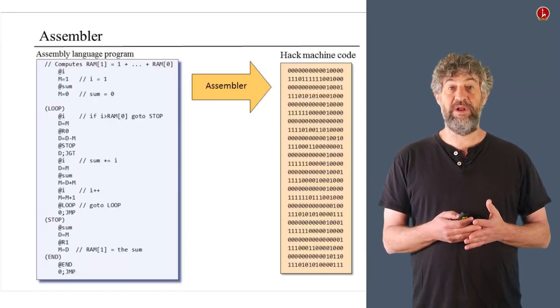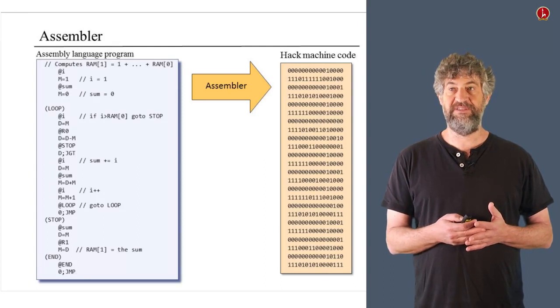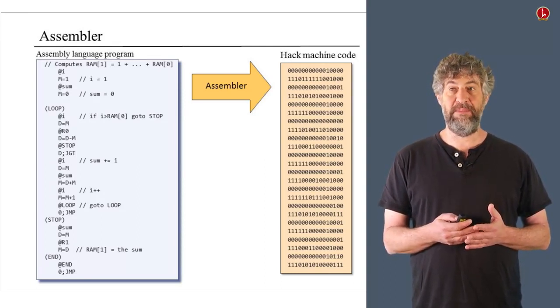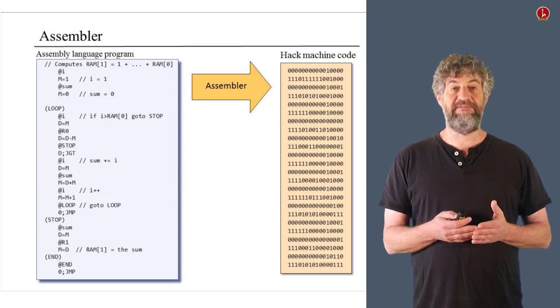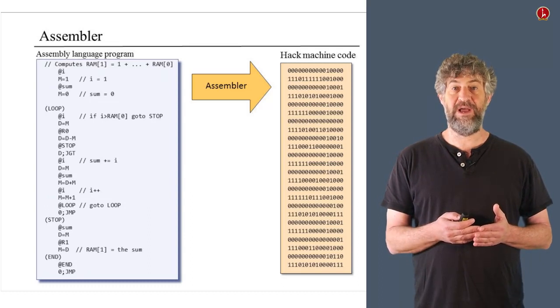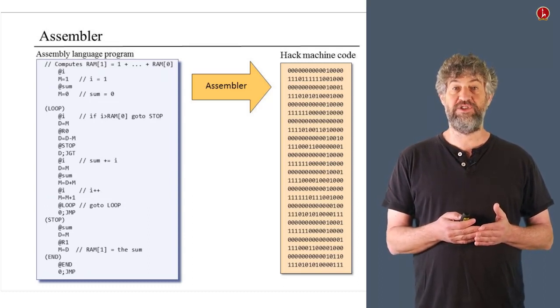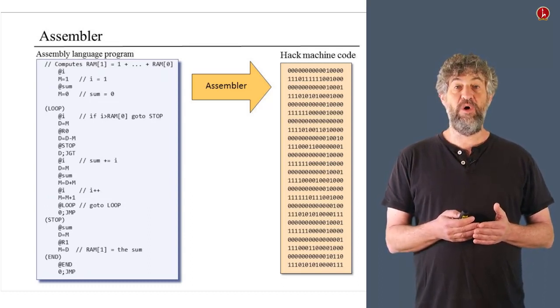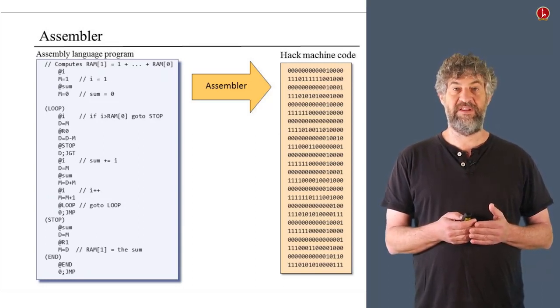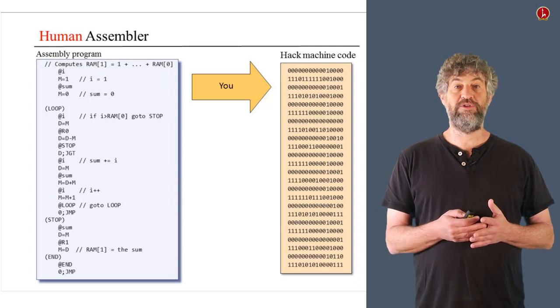So basically, your goal in this exercise is exactly the same as the goal of the people who write the program. Take as input a file in assembly language and produce as output another file in machine language, which is the exact translation of the assembly language. The only difference is that programmers would write a program that does this translation, while in your case you're going to do it yourself.